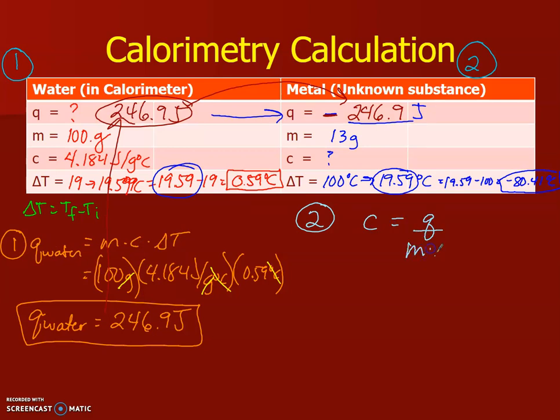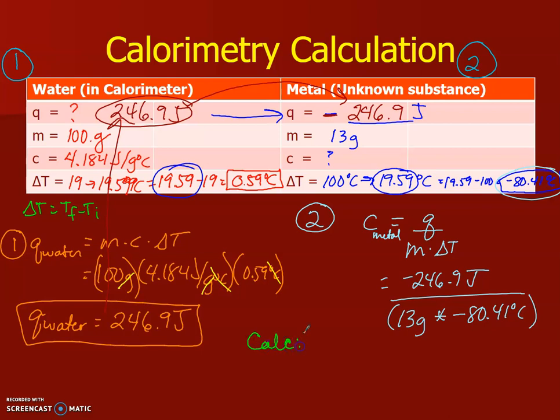Q over m delta T, and this is for the c of my metal. So that is negative 246.9 joules divided by my mass, which is 13 grams, times my negative 80.41 degrees Celsius. Now please make sure that you put this in the calculator correctly. This is where people tend to make mistakes.